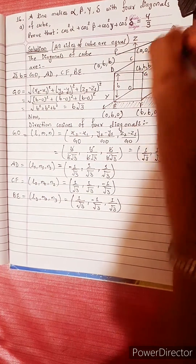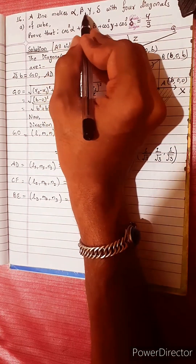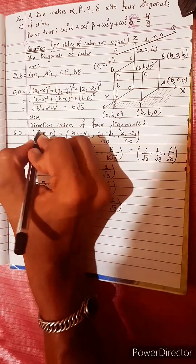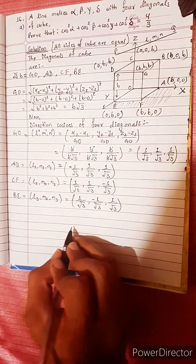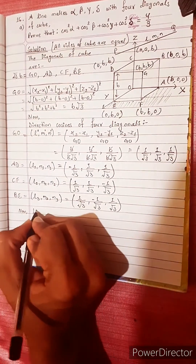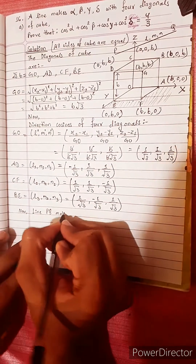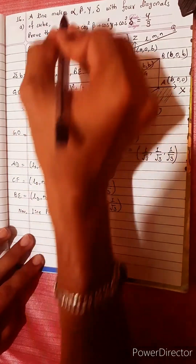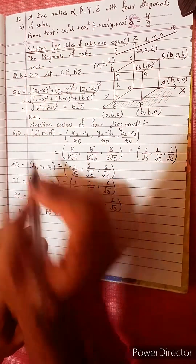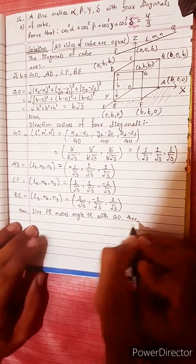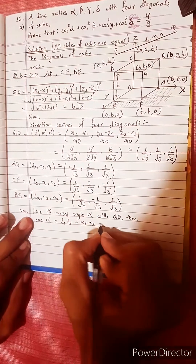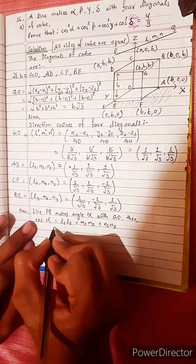Suppose line PQ makes respective angles alpha, beta, gamma, delta with the four diagonals. Direction cosines of PQ are L, M, N. According to the question, line PQ makes angle alpha with the diagonal AD. Using the formula: cos alpha equals L1·L2 + M1·M2 + N1·N2.